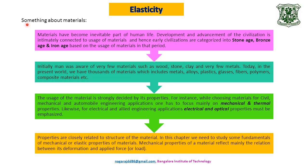First, I give you a brief introduction to materials. Materials have become an inevitable part of human life. Development and advancement of civilization is intimately connected to the usage of materials, and hence early civilizations were categorized into the Stone Age, Bronze Age, and Iron Age based on the materials used. Initially, man was aware of very few materials such as wood, stone, clay, and some metals. Today we have thousands of materials including metals, alloys, plastics, glasses, fibers, polymers, etc.